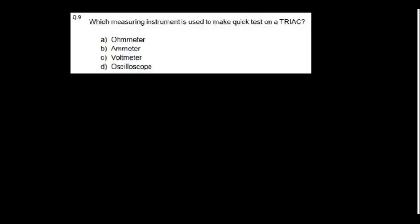Which measuring instrument is used to make quick test on a triac? That is ohm meter. Whether short is there or open is there, we can just check with ohm meter.